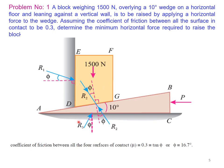Since the coefficient of friction μ = tan φ = F/N = 0.3, we get the angle of friction φ = 16.7 degrees. Looking at the diagram, we have the applied force P to find, the self-weight of 1500 N, and the resultant reactions R1 (resultant of N1 and F1 at the wall-block interface), R2 (resultant of N2 and F2 at the block-wedge interface), and R3 (resultant of N3 and F3 at the wedge-floor interface).